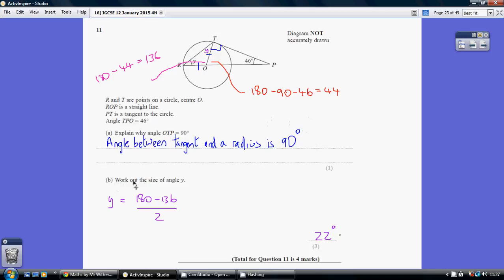Now for part B, work out the size of the angle Y. Now, having worked out that this angle here is 90, this angle here, so angle TOP, being the third in the triangle, must be 180 take away 90 take away 46, which is 44. Angles in the triangle adding up to 180. So that's this angle here.